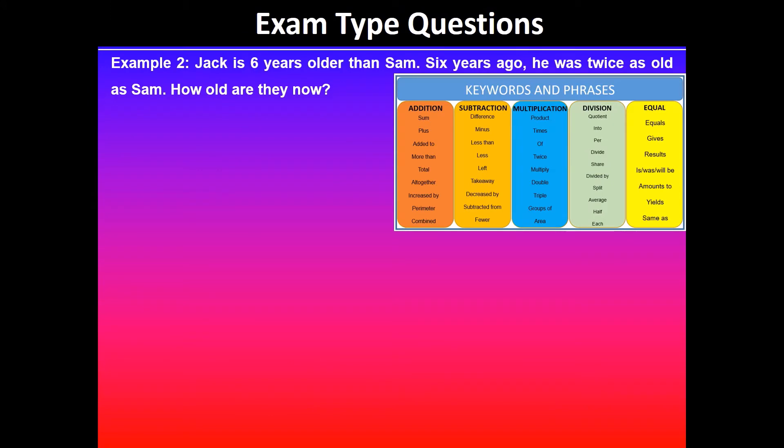We'll have a look at the second example. It says that Jack is six years older than Sam. Six years ago he was twice as old as Sam. How old are they now?